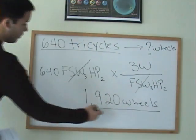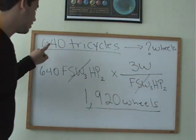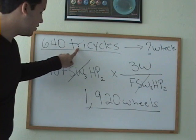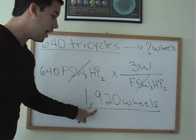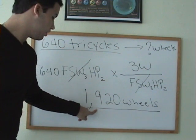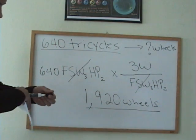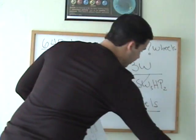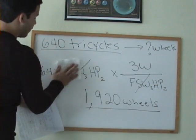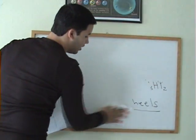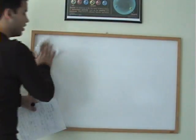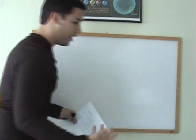So, if you're going to make 640 tricycles, then you need to buy 1,920 wheels. This is a real-life, everyday scenario that companies need to know in order to know how much of an item to buy.